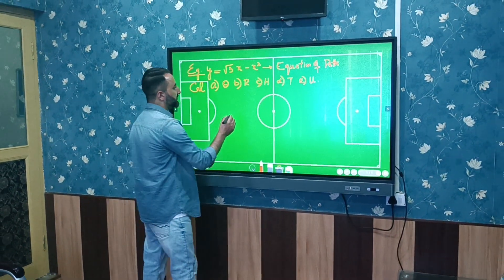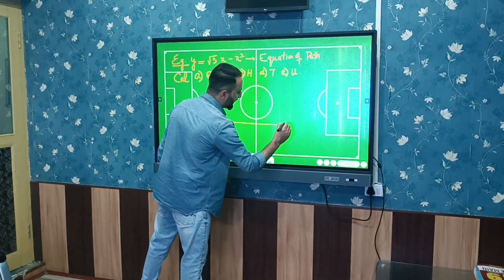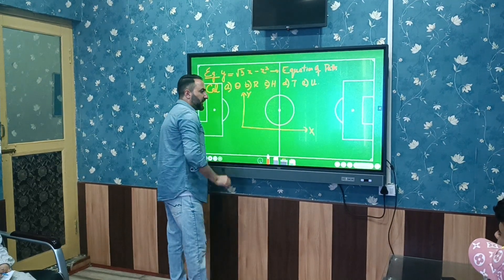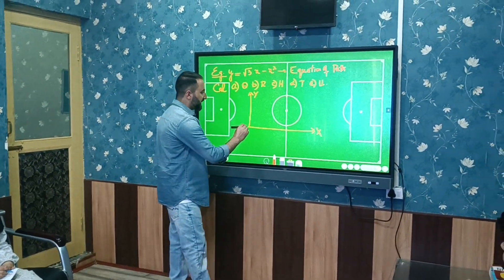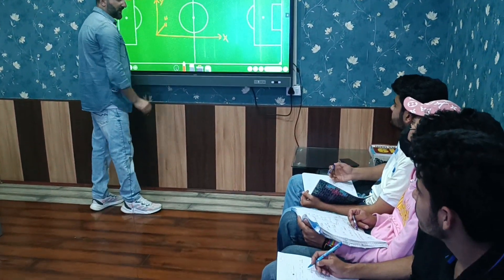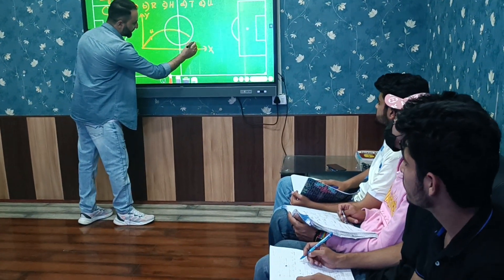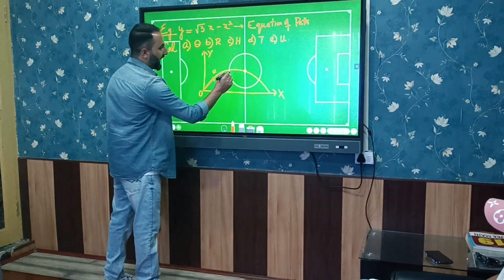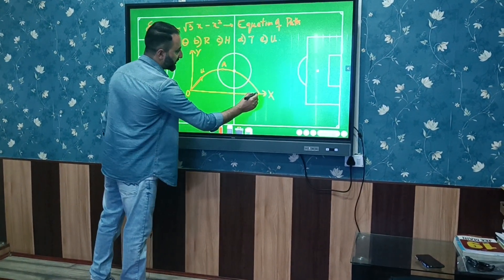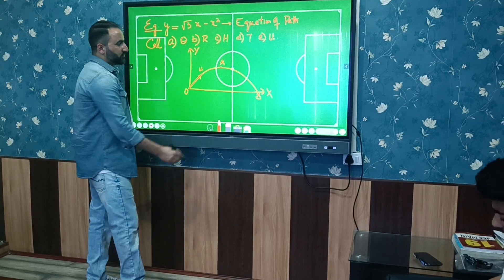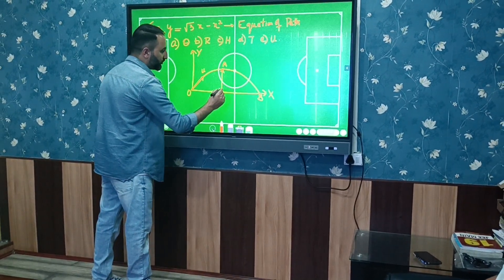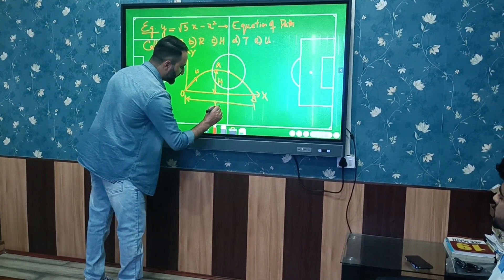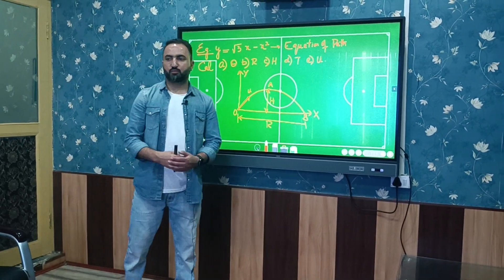First, let's understand the setup. We have the x-axis and y-axis with the origin as the initial point of projection. The particle is thrown with some initial velocity u at angle theta, following a parabolic path. Point O is the origin, point A is the highest point, and point B is the landing point. The vertical distance to A is the maximum height, and OB is the horizontal range.